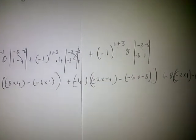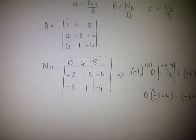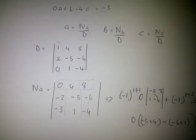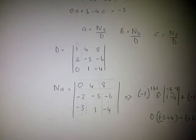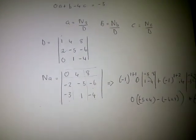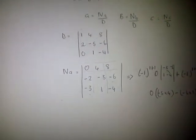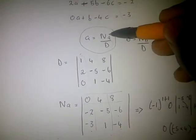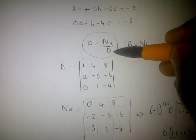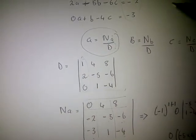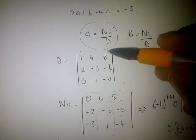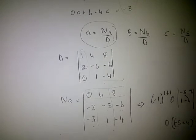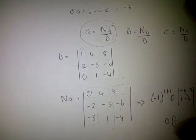After solving Na, this is how we solve all values — D, Nb, and Nc — using the same method. To determine a, you divide Na by D. To determine b, you divide Nb by D. I'm going to leave all the calculations to you guys so that you can practice.